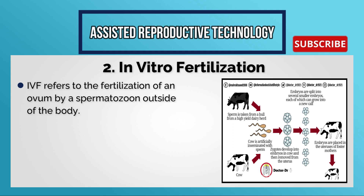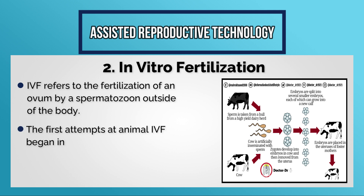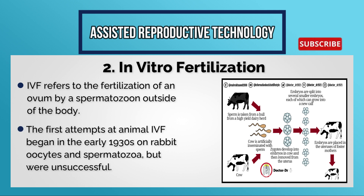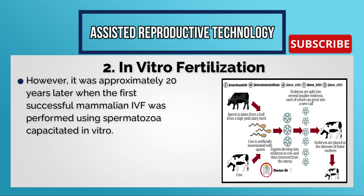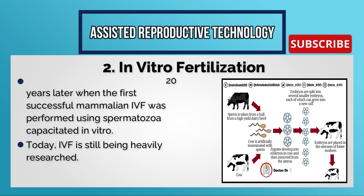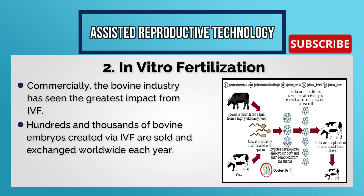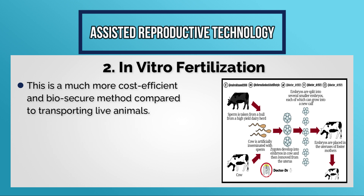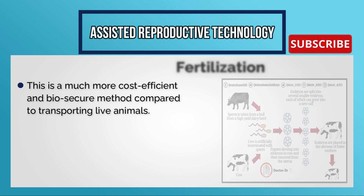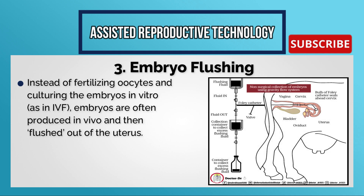In vitro fertilization (IVF) refers to the fertilization of an ovum by a spermatozoan outside of the body. The first attempt at animal IVF began in the early 1930s on rabbit oocytes and spermatozoa but were unsuccessful. It was approximately 20 years later when the first successful mammalian IVF was performed using spermatozoa capacitated in vitro. Today the bovine industry has seen the greatest impact from IVF — hundreds of thousands of bovine embryos created with IVF are sold and exchanged worldwide each year, which is a more cost-efficient and biosecure method compared to transporting live animals.